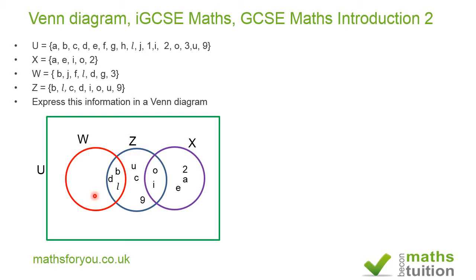For elements peculiar only to W, I have: 3, J, F, and G. Counting all elements so far in my diagram I get 15, but the universal set has 17 elements. I can see that 1 and H are missing, so those go outside the three subsets but inside the universal set rectangle.